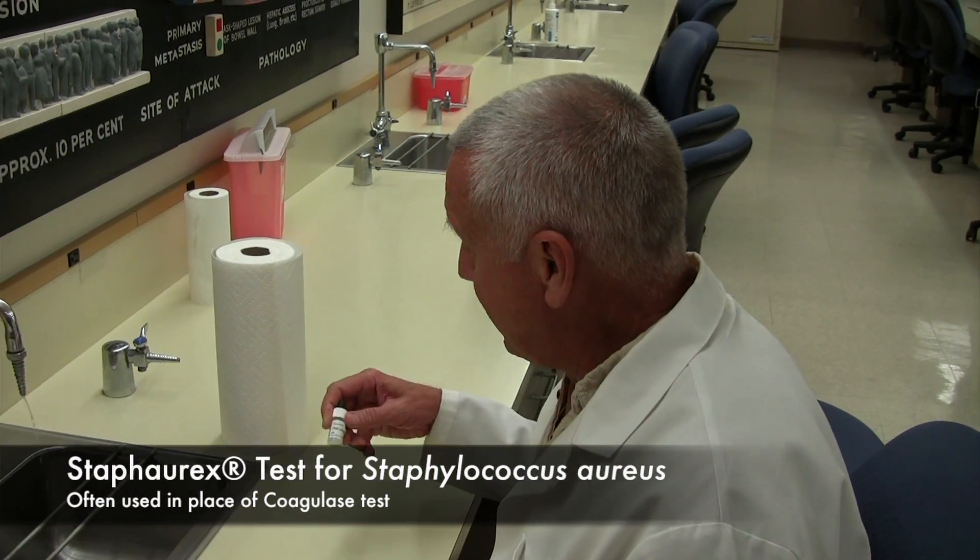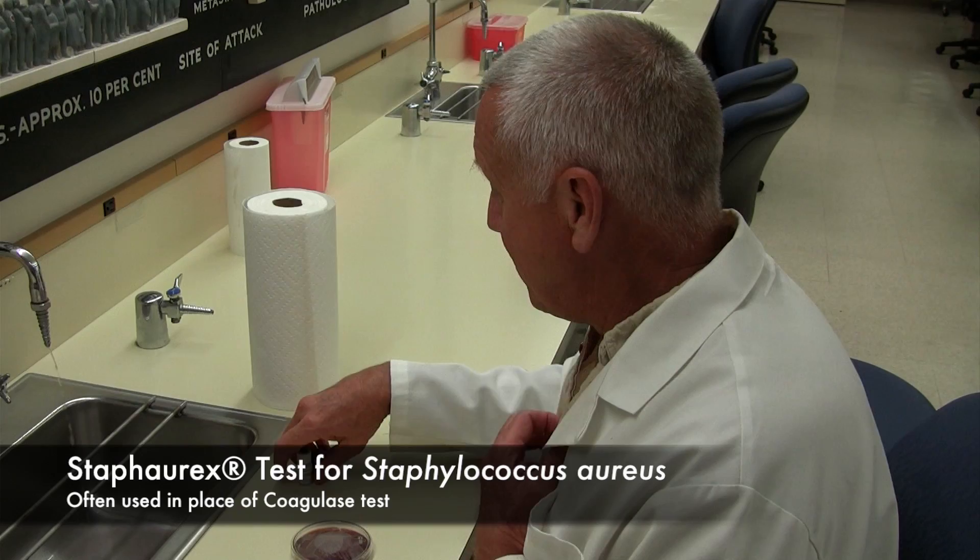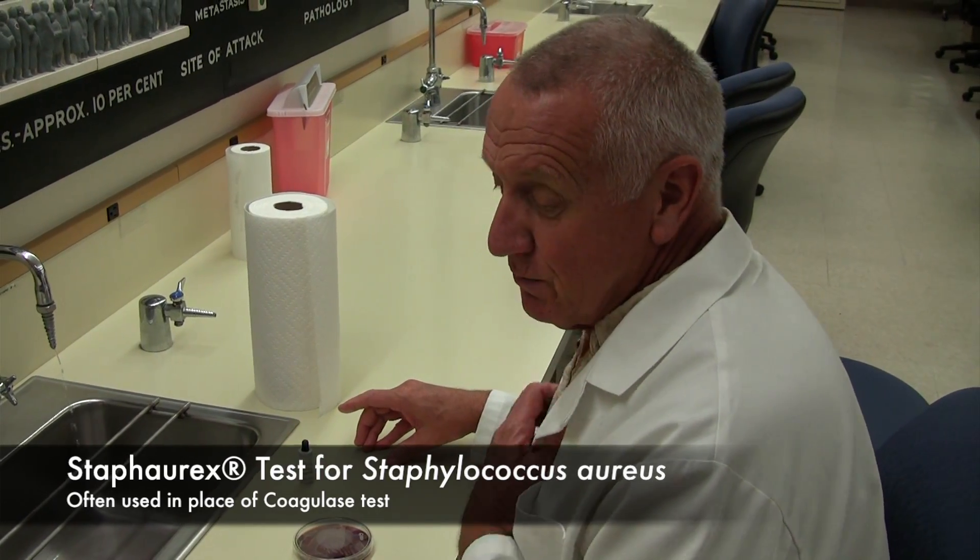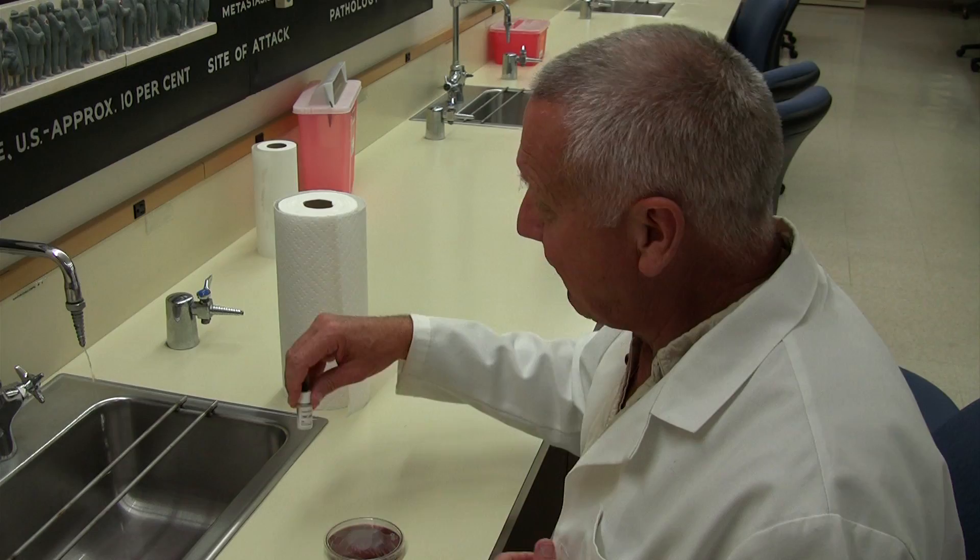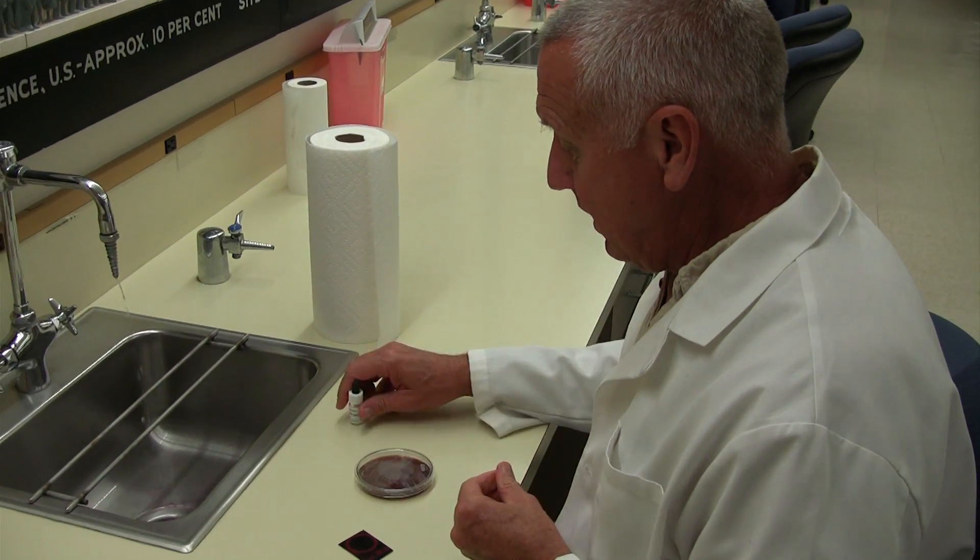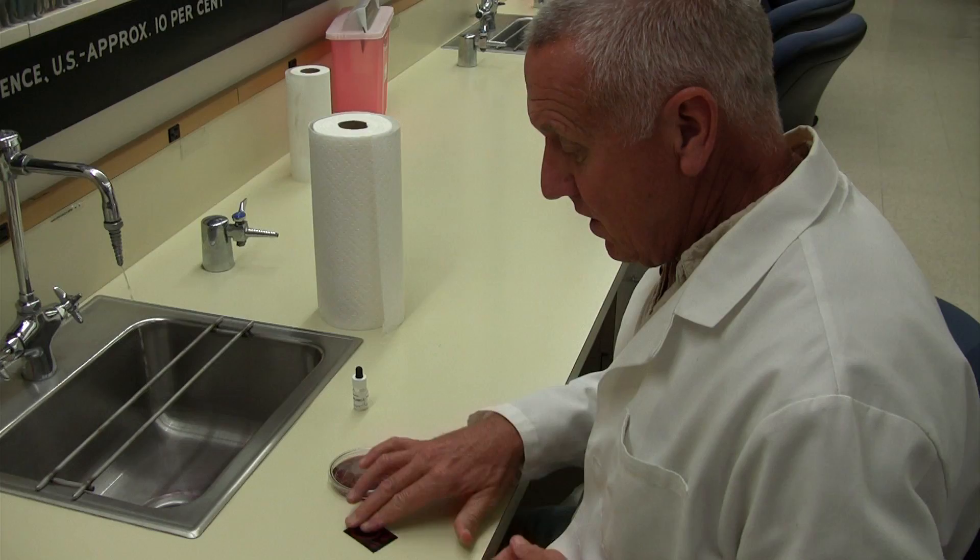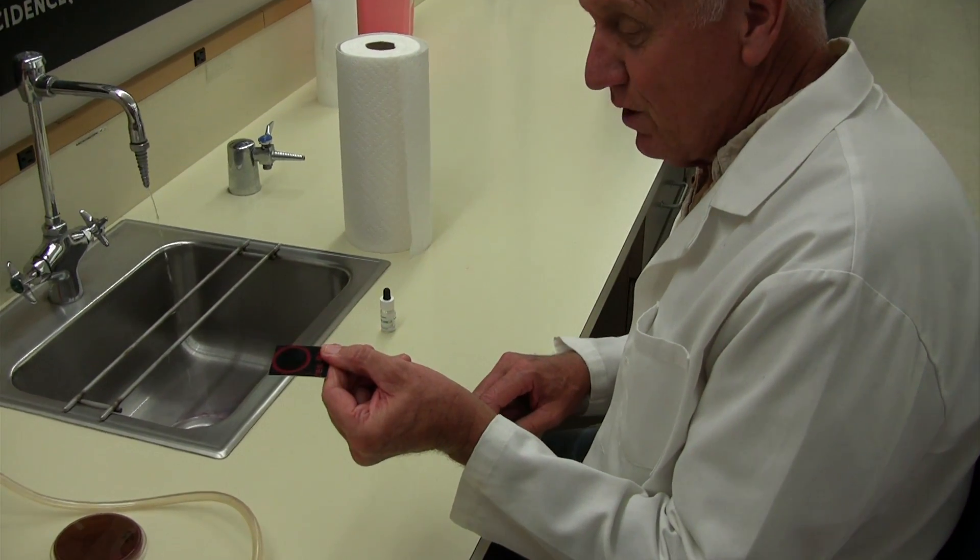The next test we're going to show you is the Staphaurex test. This is a test to see if your organism will be Staph aureus or not. We need for this test the Staphaurex test reagent, the culture to be tested, and a black background slide to do the test on.